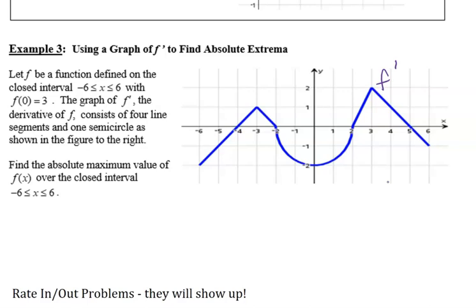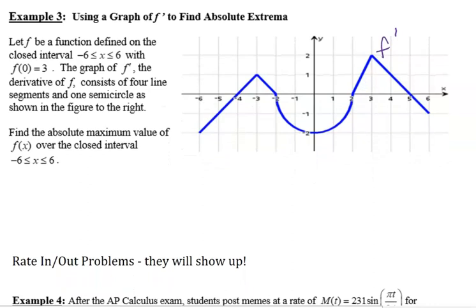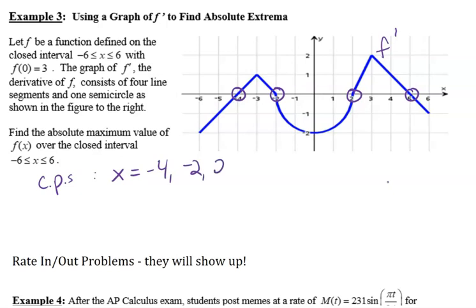For finding absolute extrema, we need to first consider our critical points. Critical points can happen where the derivative f prime equals 0 or doesn't exist, and we also consider endpoints of the closed interval from negative 6 to 6. F prime exists everywhere on negative 6 to 6. It equals 0 at negative 4, negative 2, 2, and 5. We also need to consider our endpoints negative 6 and positive 6, so we have a lot of candidates to test.